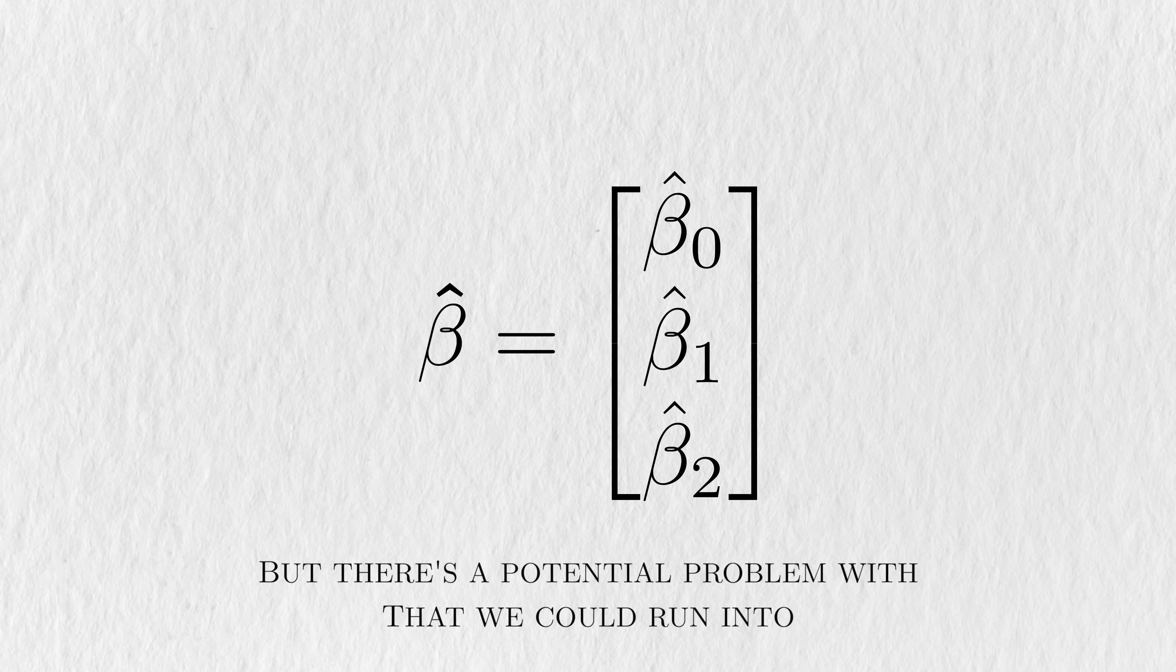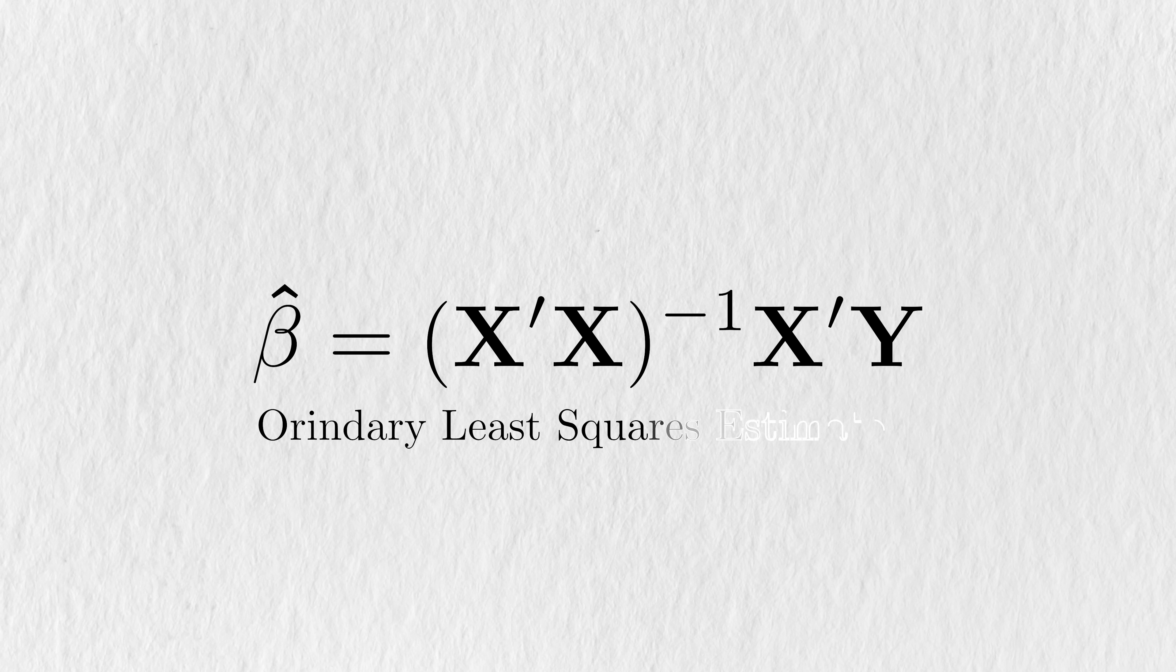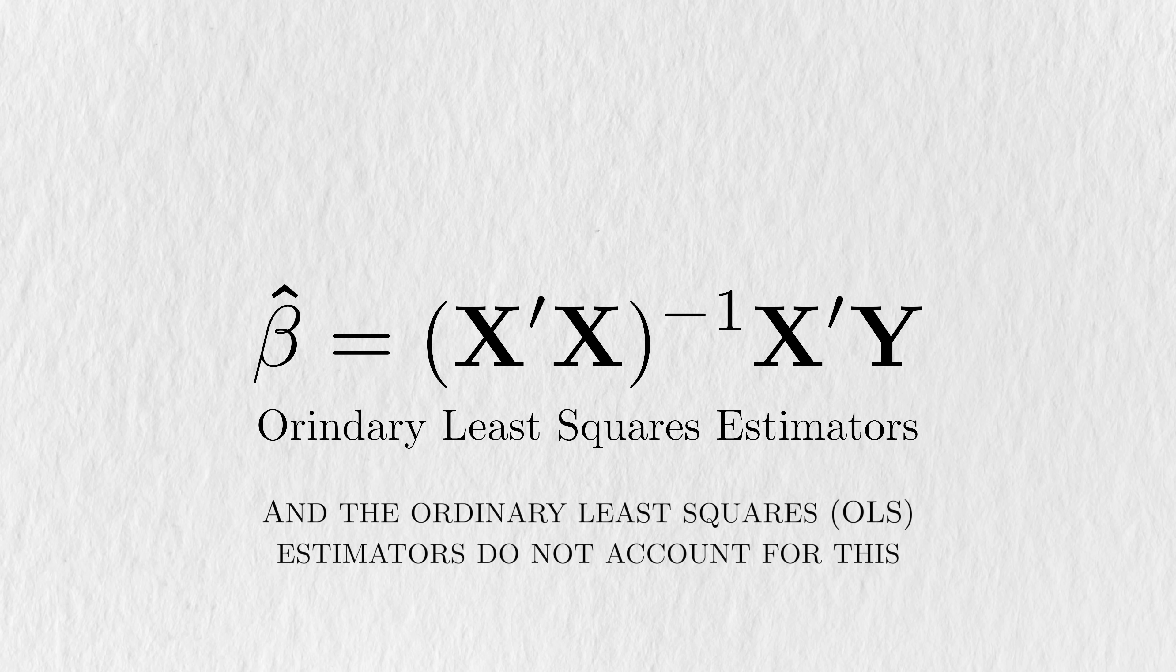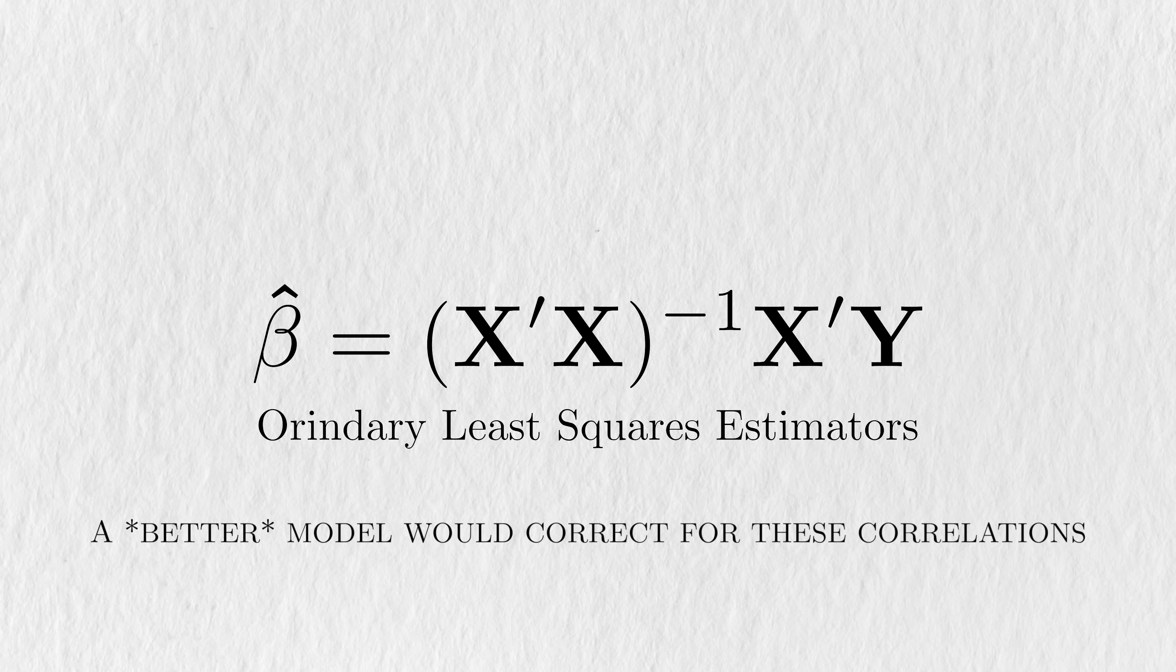But there's a problem with this approach. If we use the typical ordinary least squares estimators for these coefficients, we need to assume that the distinct errors in the data are uncorrelated. When you're practicing statistics, it's important to distinguish between how you characterize the data and the statistical model you're using to approximate it. Longitudinal data naturally has correlation due to repeated measurements from each person, but using ordinary least squares estimators would ignore this. A better model would correct for these correlations. So, is there such a model?